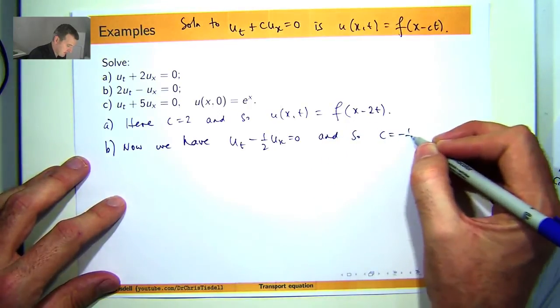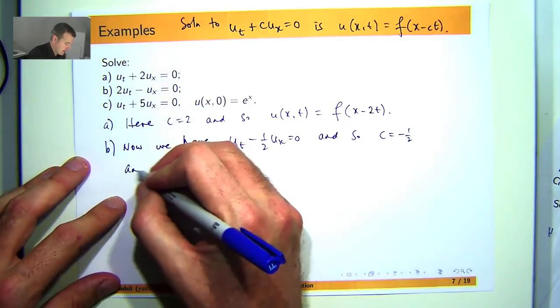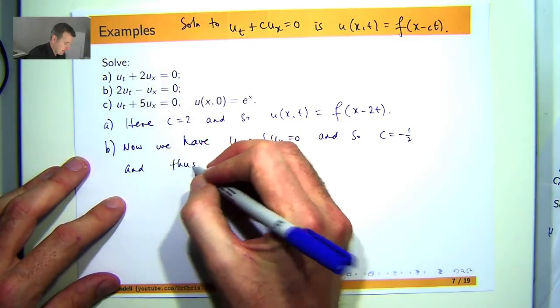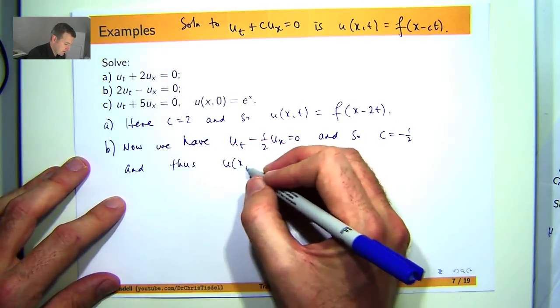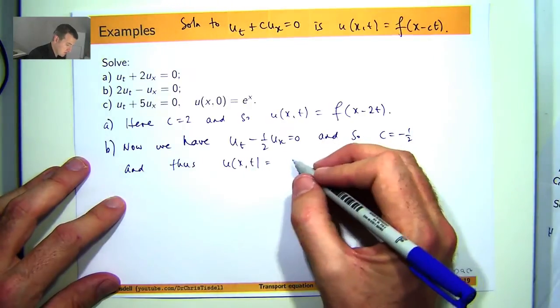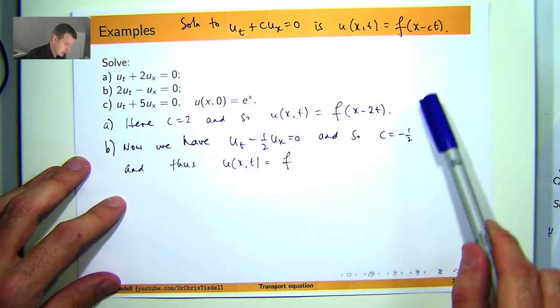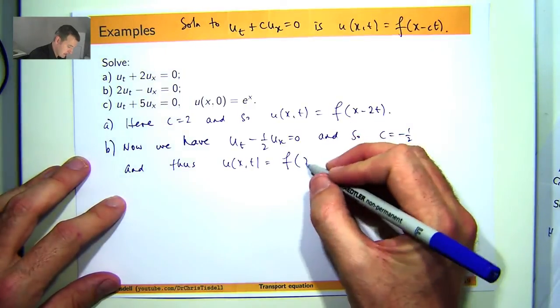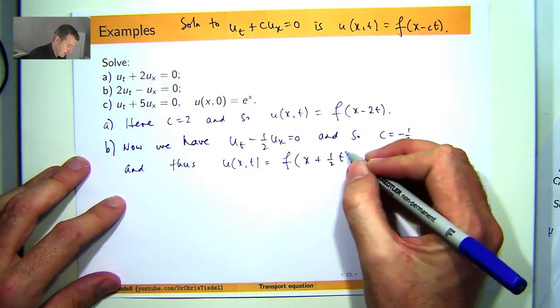So C equals negative 1 half in this context and the general solution is going to be f of x minus ct. So in this case it will be the following.